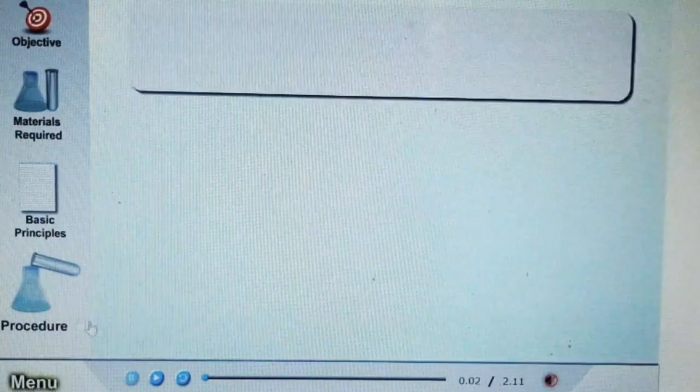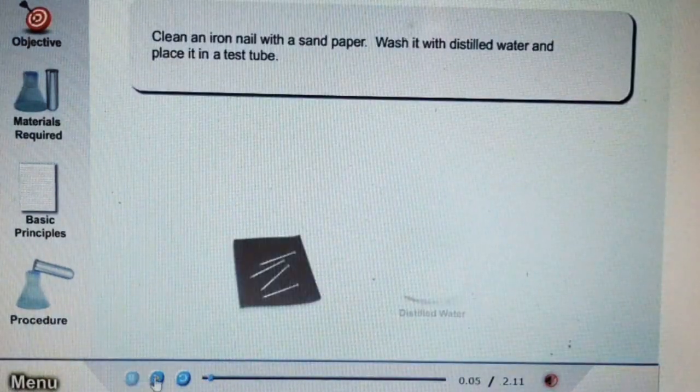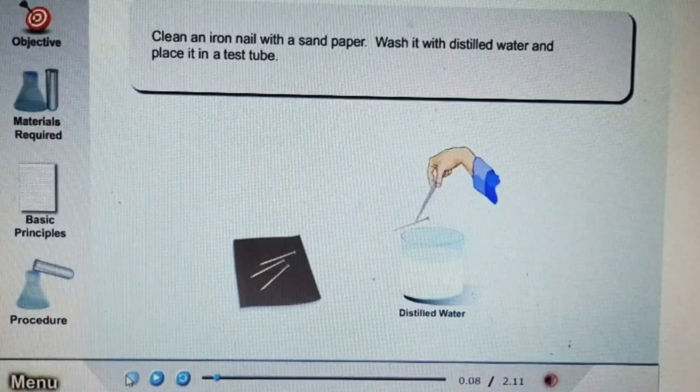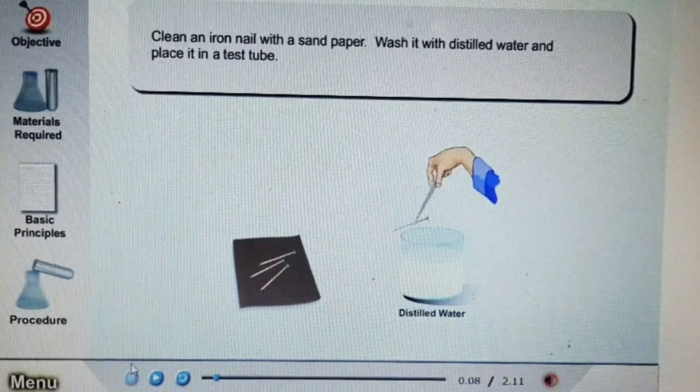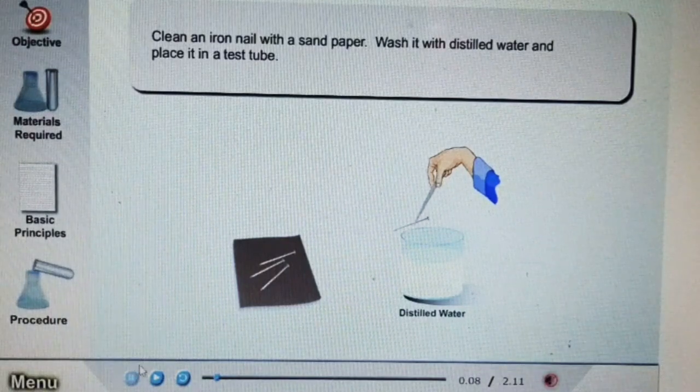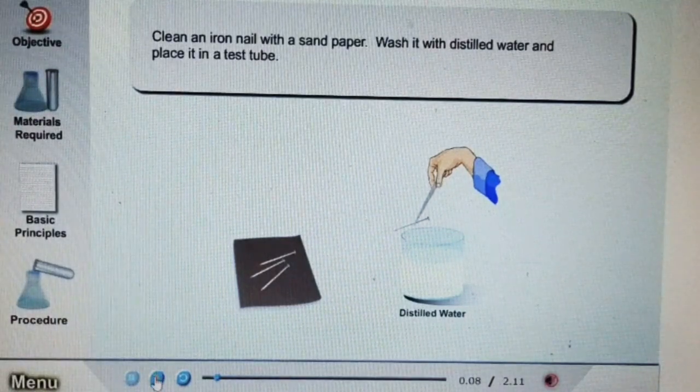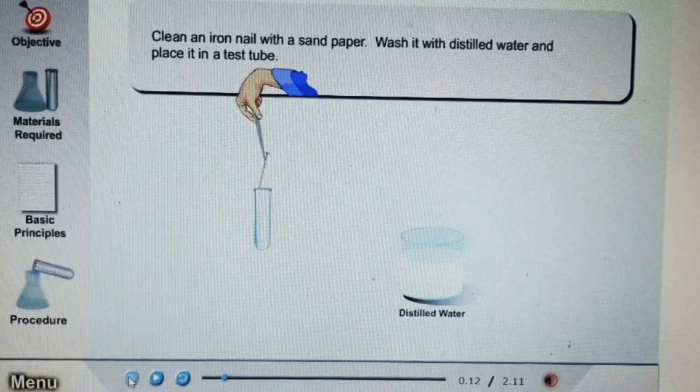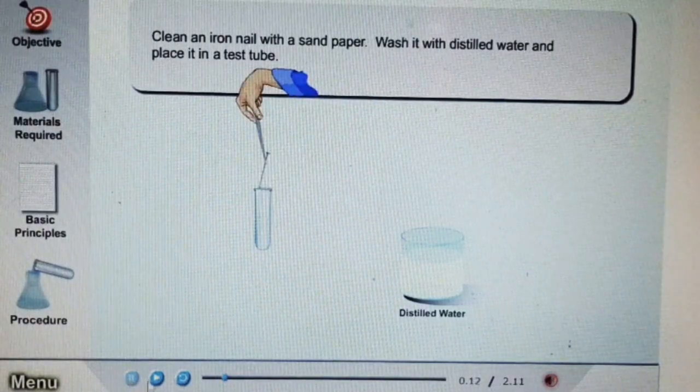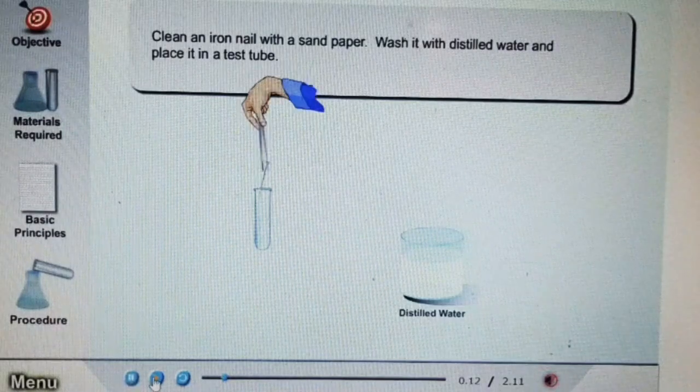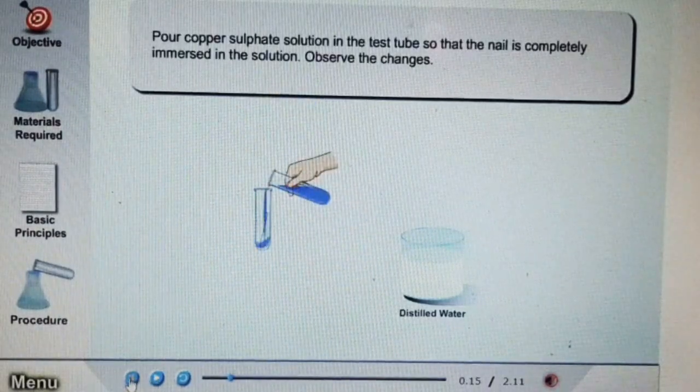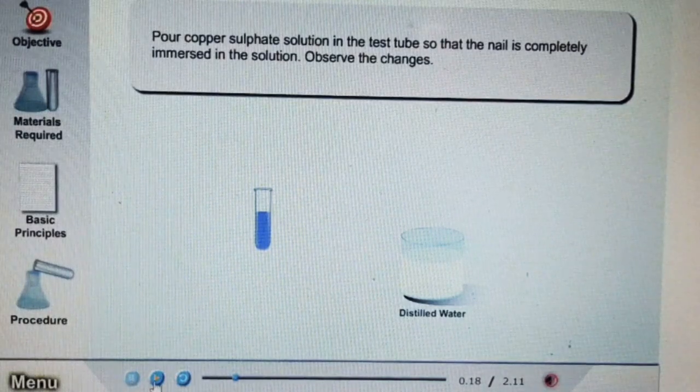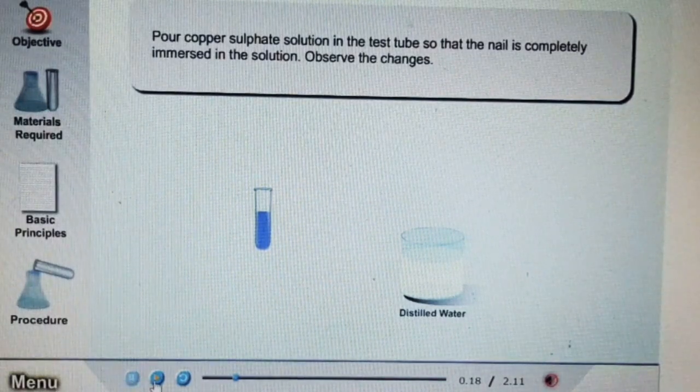Now let's see the procedure. First, take the iron nails and rub them with sandpaper to make them clean. Then wash them with distilled water. After washing, keep the nails in the test tube and add copper sulfate solution to it. Keep it undisturbed for some time and let the reaction begin.